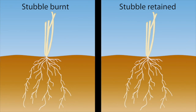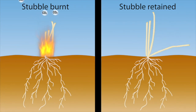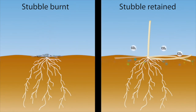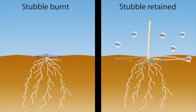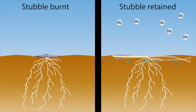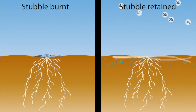Above ground, when it's burnt, we're putting a match to it, so the carbon goes up as carbon dioxide. In the stubble retained system, the microbes are still breaking down that organic matter, still breaking down that stubble as an energy source and releasing 75% of that carbon as carbon dioxide. Our burning efficiency is probably no more than 75%.